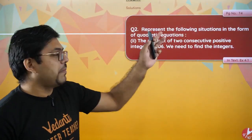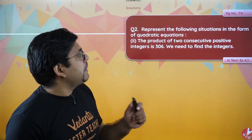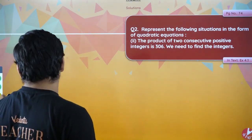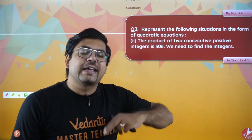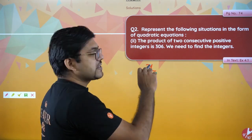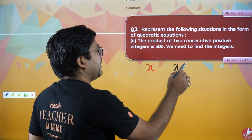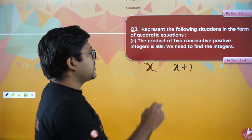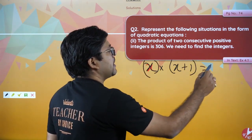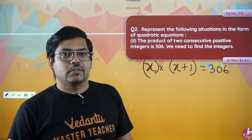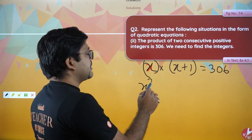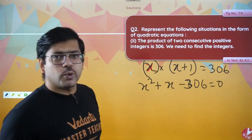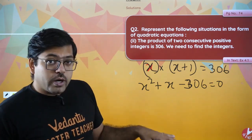The next question asks: represent the following situation in the form of a quadratic equation. The product of two consecutive positive integers is 306. We need to find the integers. Let one integer be x, then the next consecutive integer is x + 1. Their product is x(x + 1) = 306, which gives x² + x − 306 = 0.